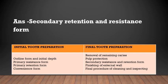The answer is secondary retention and resistance form. There are two stages in tooth preparation: initial tooth preparation stage and final preparation stage. Initial stage includes outline form and initial depth, primary resistance form, primary retention form, and convenience form. Final stage includes removal of remaining caries, pulp protection, secondary resistance and retention form, finishing of external walls, and final cleaning and inspection.